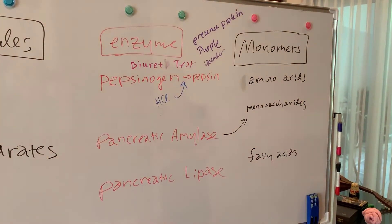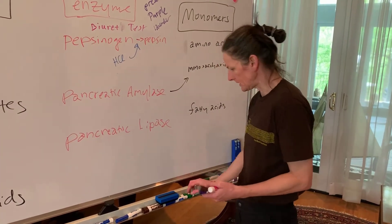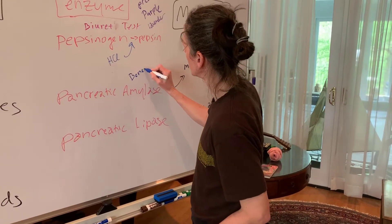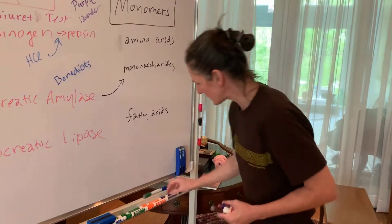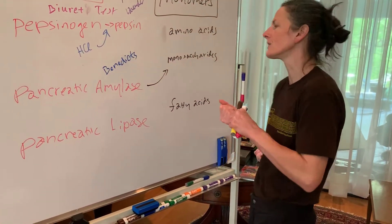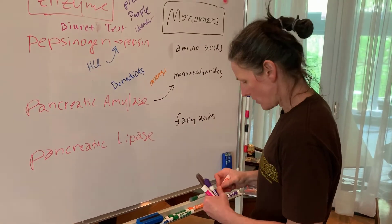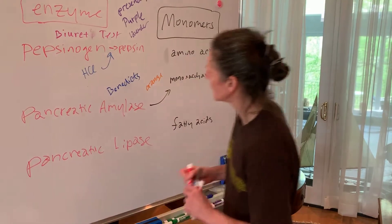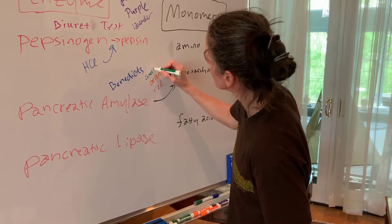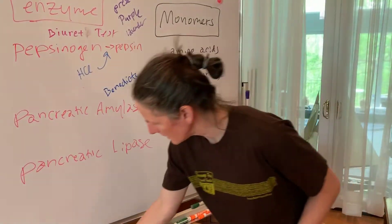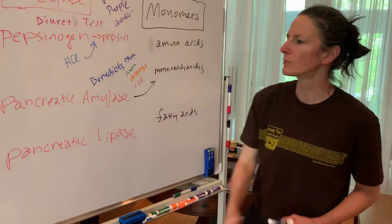For carbohydrates, we use Benedict's solution, which starts off blue. In the presence of monosaccharides — reducing sugars like glucose or fructose — it changes color. It will change to orange in the presence of monosaccharides, and if fully saturated it changes to red. During the process it goes through green, so Benedict's progresses from blue to green to orange and eventually red as we break down carbohydrates into monosaccharides.